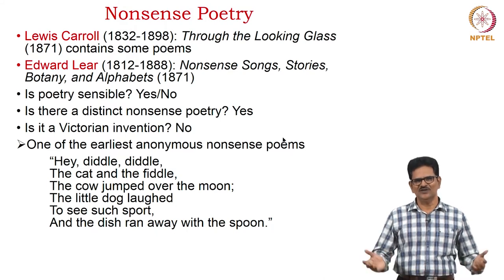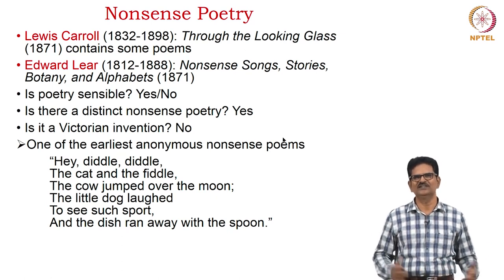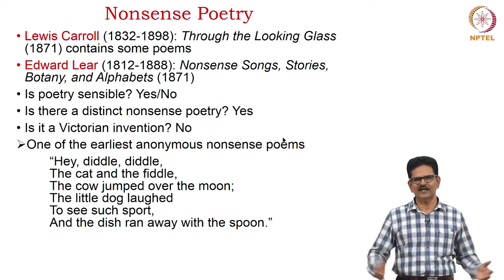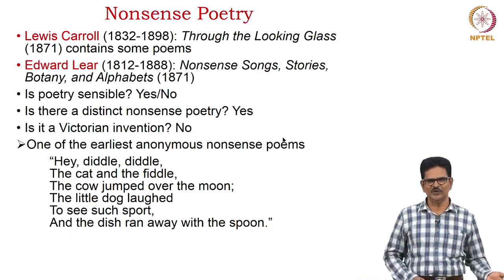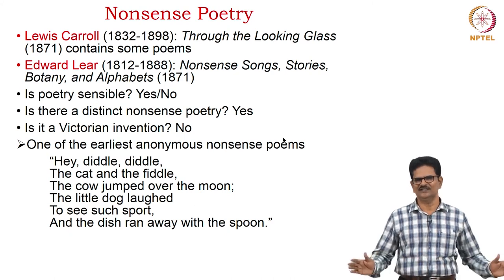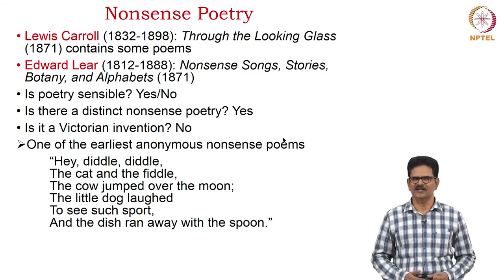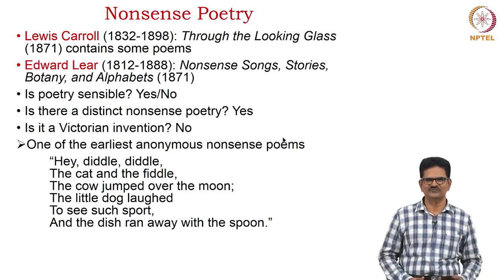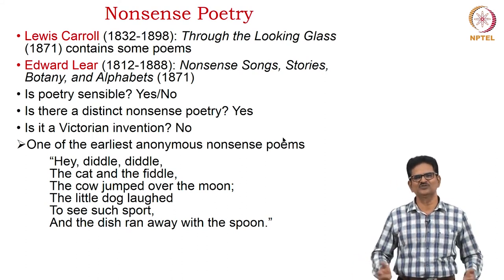Now we come to nonsense poetry. Lewis Carroll's novel Through the Looking Glass contained some nonsense poems. Edward Lear became a serious practitioner of this form, with a collection called Nonsense Songs, Stories, Botany and Alphabets, published in 1871. Is poetry sensible? The answer may be yes or no. Is there a distinct nonsense poetry? Yes. Is it a Victorian invention? Certainly not. One of the earliest examples is the nursery rhyme: 'Hey diddle diddle, the cat and the fiddle, the cow jumped over the moon, the little dog laughed to see such sport, and the dish ran away with the spoon.' Many rhymes may not make sense to children, but they love them.